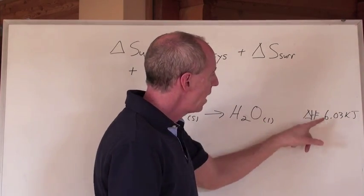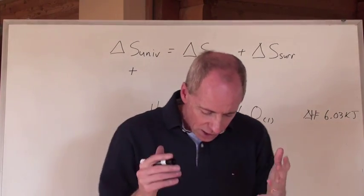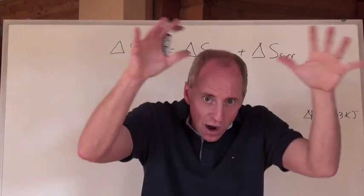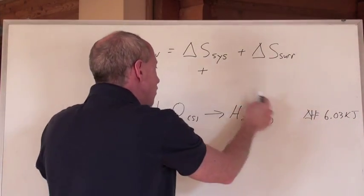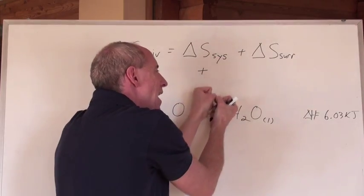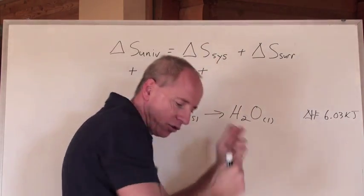Think about this. This is an endothermic process. So, what's happening to the environment around this equation if this reaction here has to gain energy, 6.03 kilojoules, from its surroundings?